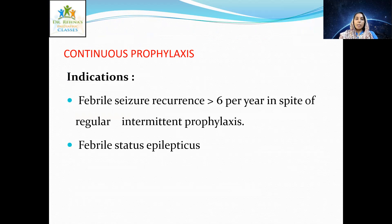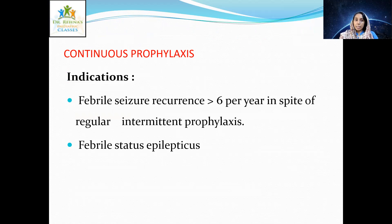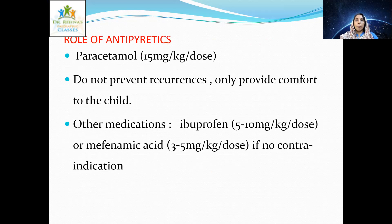Continuous prophylaxis indications: febrile seizure recurrence more than six per year despite regular intermittent prophylaxis, or febrile status epilepticus. For children under one year, use phenobarbitone 4–5 mg/kg/day in one to two divided doses. For children over one year, use sodium valproate 20–30 mg/kg/day in two to three divided doses. Duration of prophylaxis is one to two years.